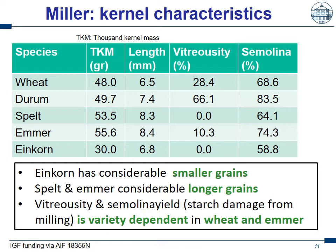That's all about agronomy. Let's go to the miller. We mainly looked at kernel structure, kernel size, and its structure — once again for wheat, durum, spelt, emmer, and einkorn. We see here the 1000-kernel mass, that means the weight of 1000 kernels, which was 48 grams for wheat, similar for durum, but spelt and emmer considerably higher than bread wheat. Einkorn on the other hand has a much lower 1000-kernel mass.